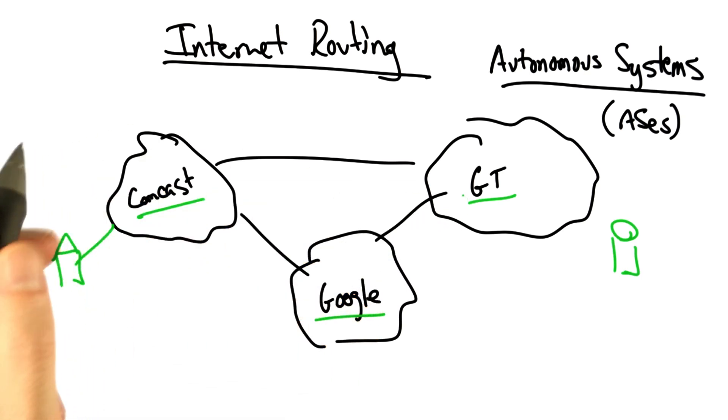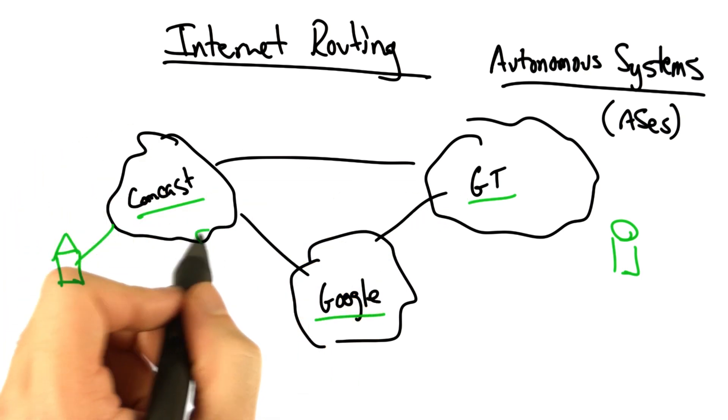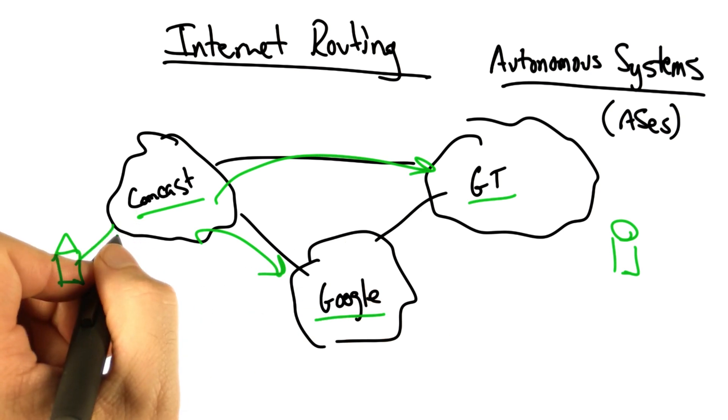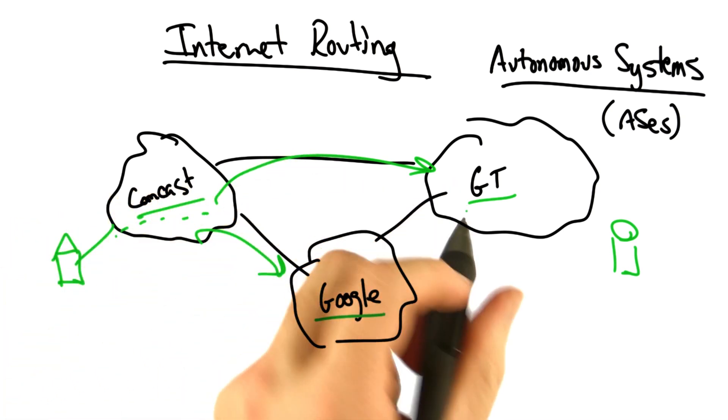When you're sitting at home on Comcast and trying to reach content in Google or Georgia Tech, your traffic actually traverses multiple autonomous systems.